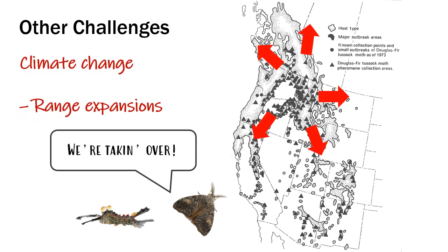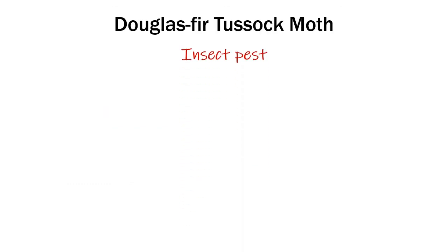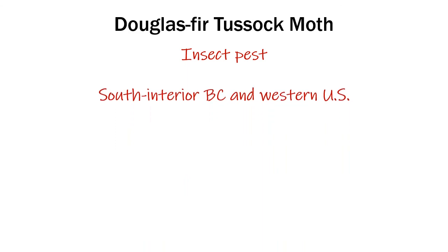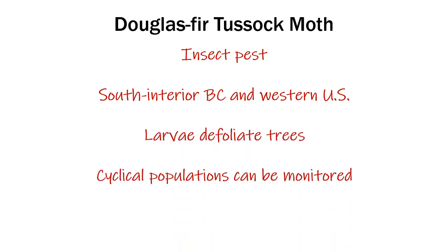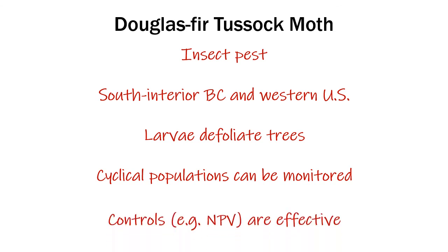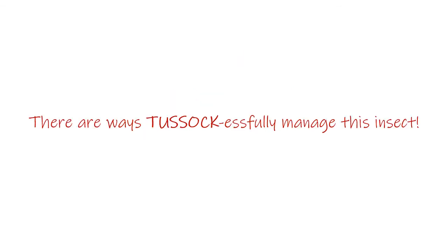In summary, the Douglas fir tussock moth is an insect considered to be a pest within its range in southern interior BC and in parts of the western US. The larvae cause serious defoliation to host trees such as Douglas fir. Fortunately, their cyclical populations can be monitored, and controls such as spraying NPV have been proven quite effective. There are ways to successfully manage this pest.